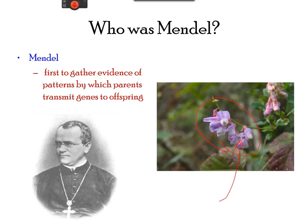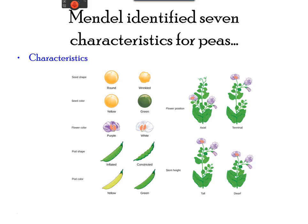Mendel performed hybridization, which involved two true breeding individuals that have different traits. In the pea plant, he identified seven unique characteristics involved with seed color, seed shape, flower color, pod shape, pod color, flower position, and stem height. He defined traits as a variation of the physical appearance of a heritable characteristic.